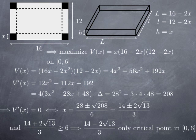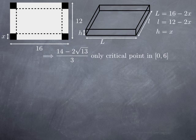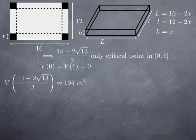Well, because we know that the maximum exists, and it can only occur at a critical point, because we already know it doesn't happen at the end points, that means we get the maximum volume for that value of x, 14 minus 2 root of 13 over 3. And this maximum volume turns out to be approximately 194 cubic inches.